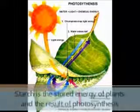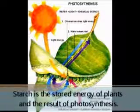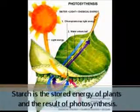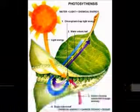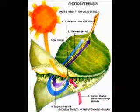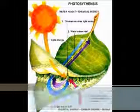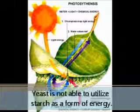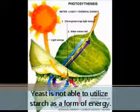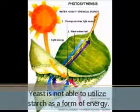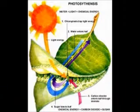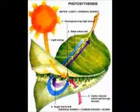If we are using starchy plants to make alcohol, we must go through the process of converting the starch into sugars that are usable by yeast. The only way that we are able to convert starches into sugars is through the use of enzymes.